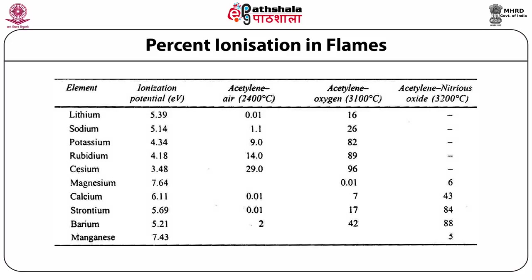This table shows the percent ionization in the flame for elements including lithium, sodium, potassium, rubidium, caesium, magnesium, calcium, strontium, barium, and magnesium. The table also shows different types of flames and their temperatures.